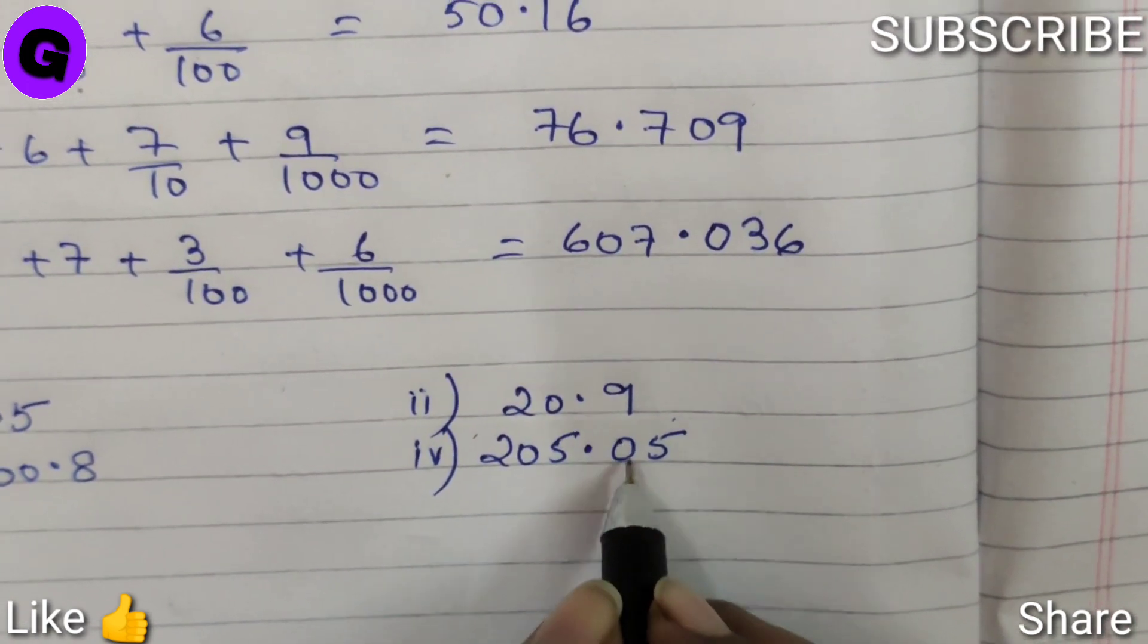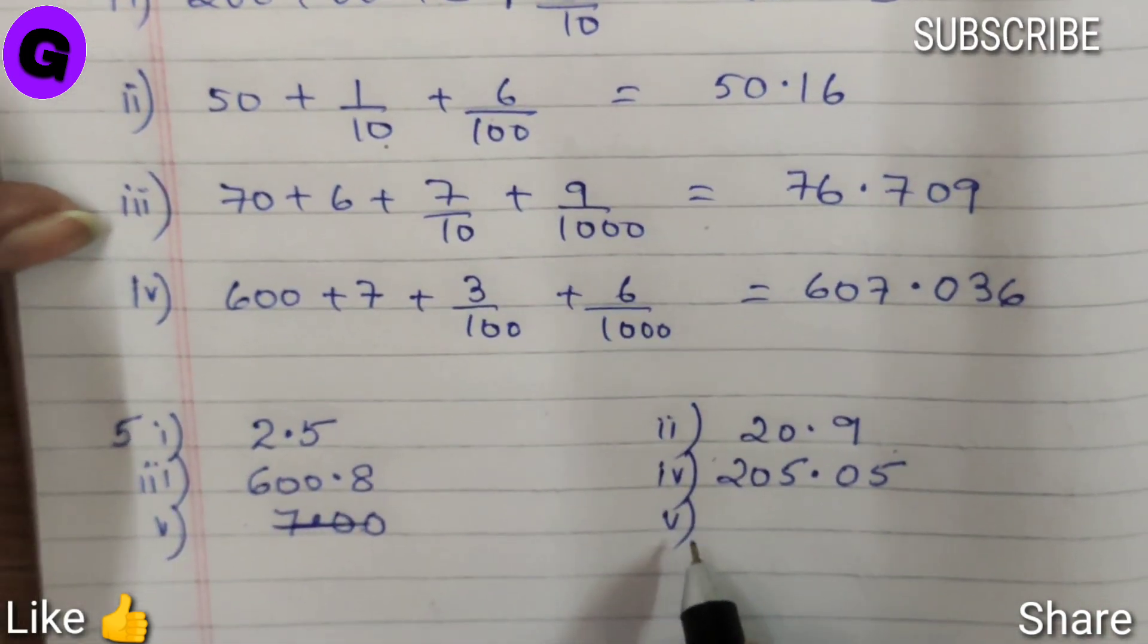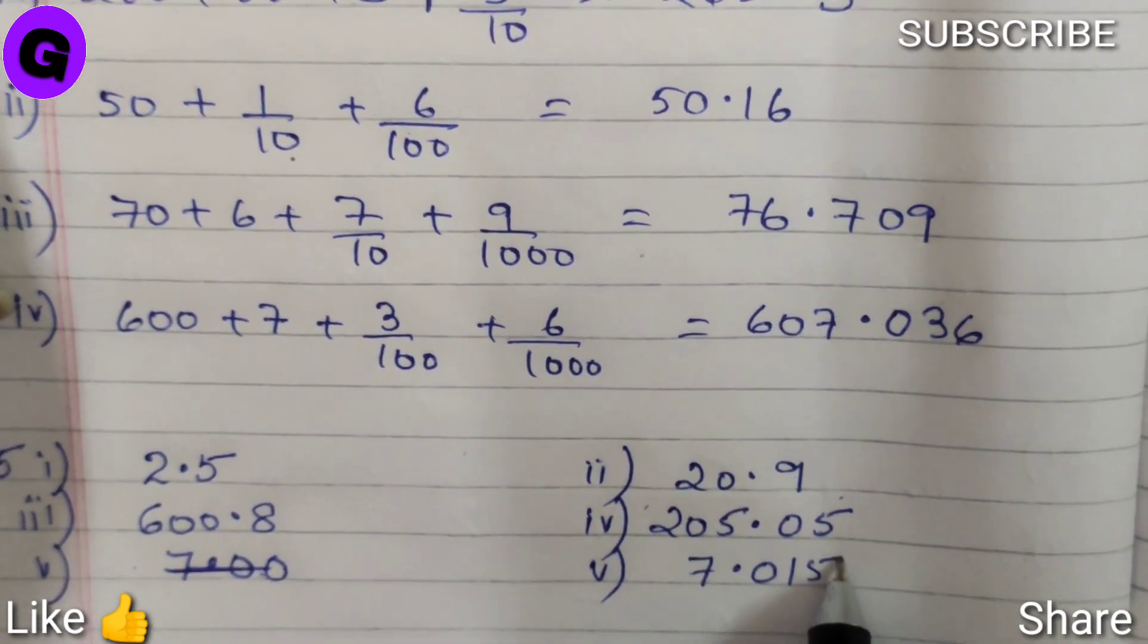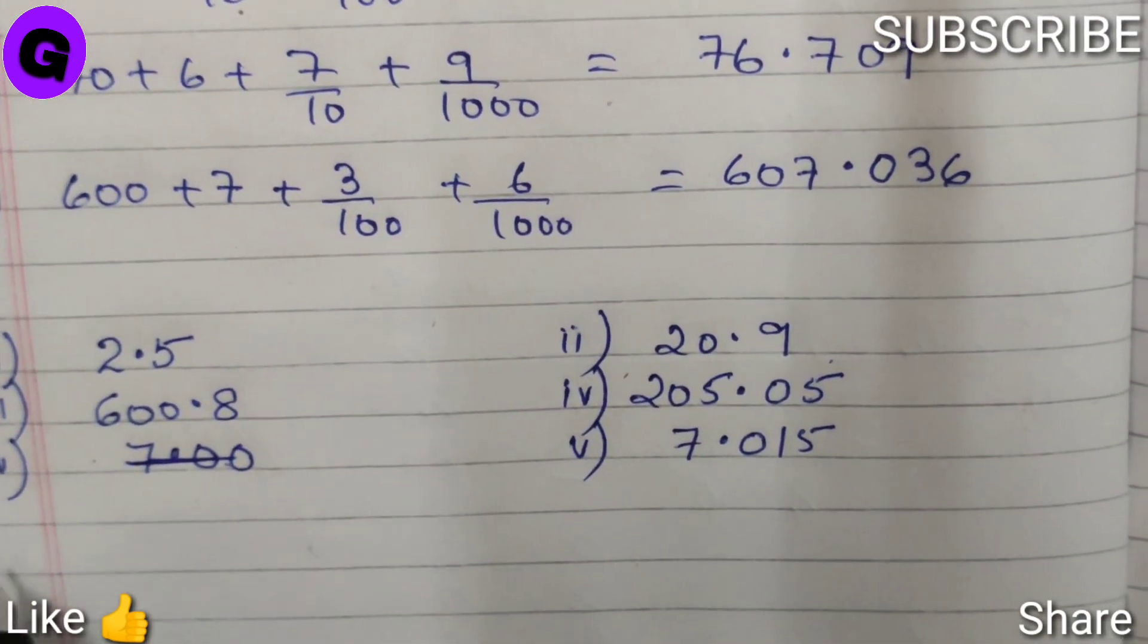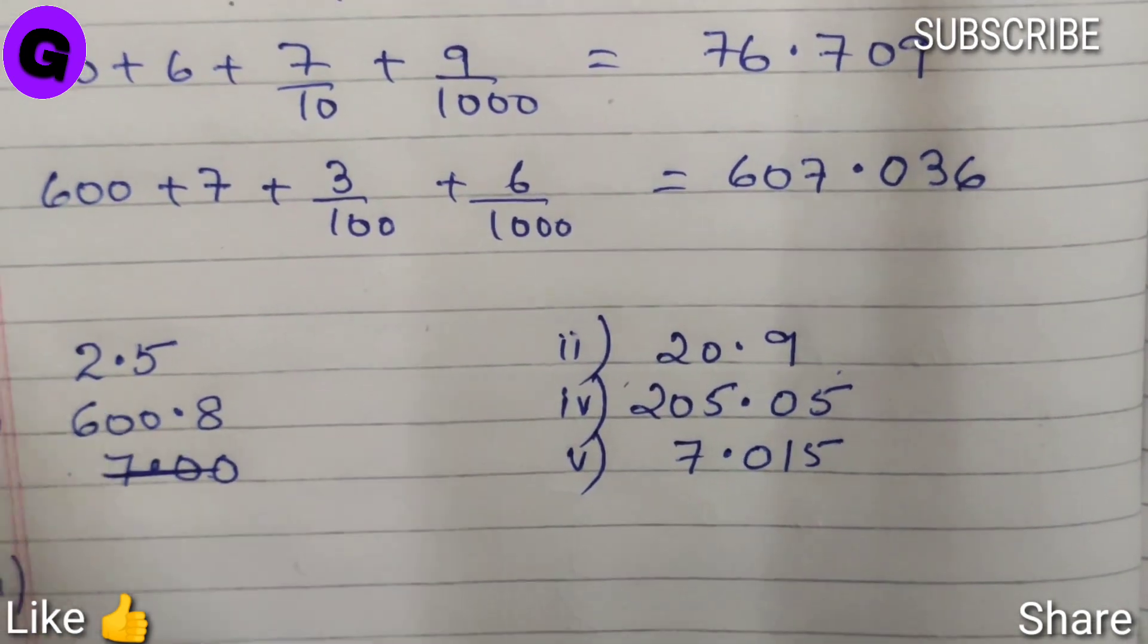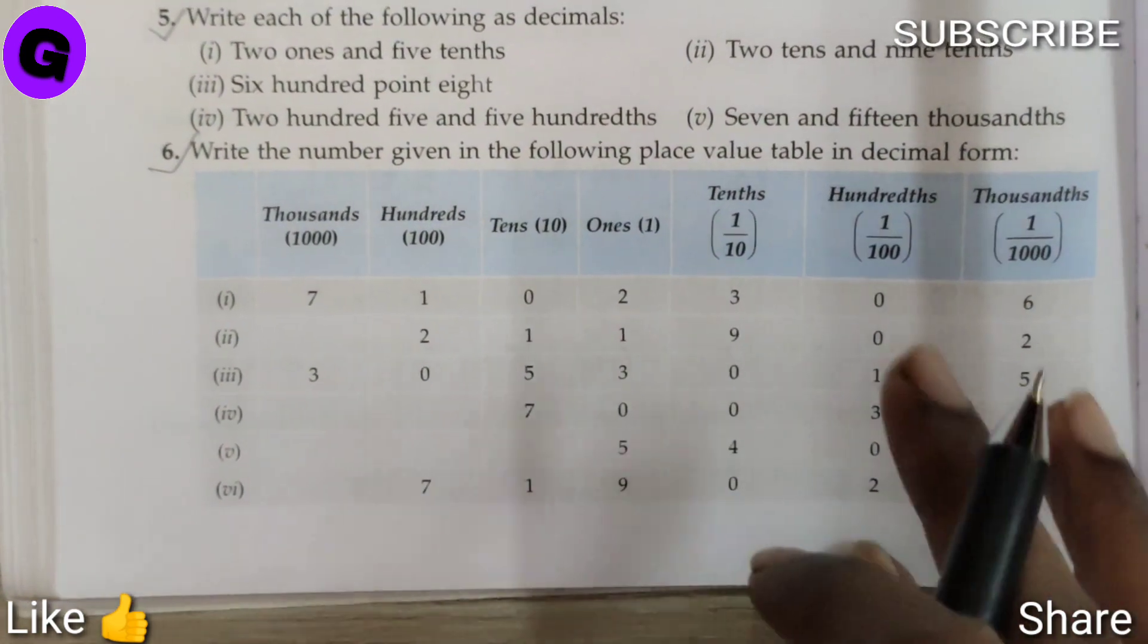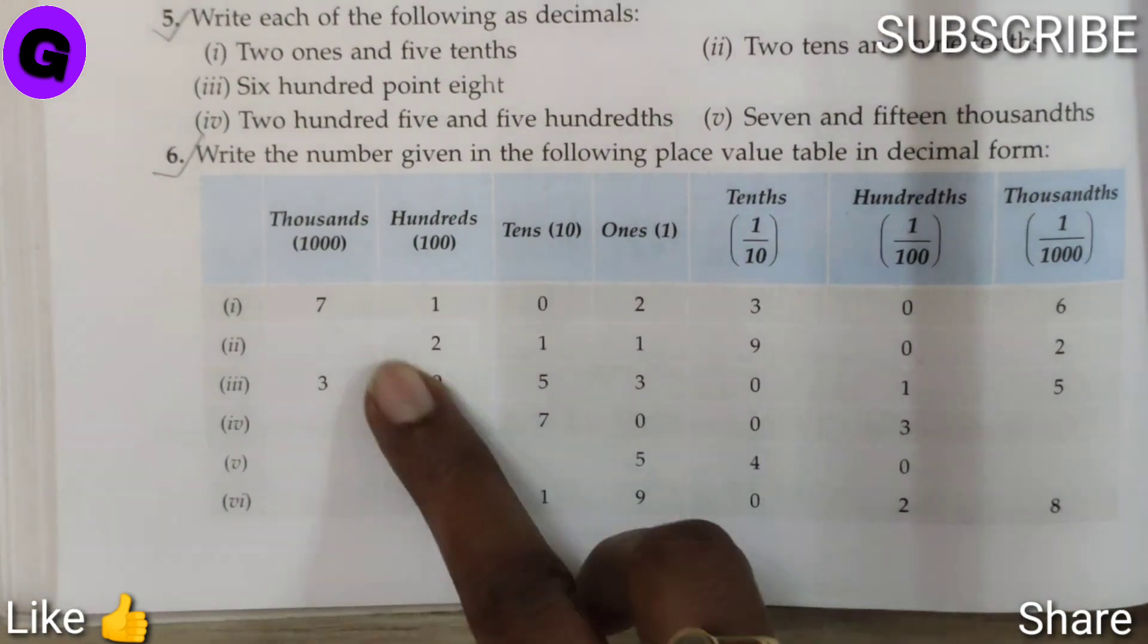Number 5 says 7 and 15 thousandths, so 7.015 is the answer. Now question number 6, please follow the book. They have already given the table. Everything is given in tabulation form and then we have to write in a decimal form.